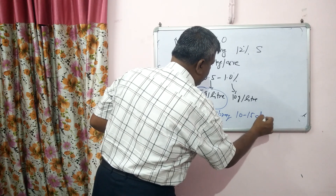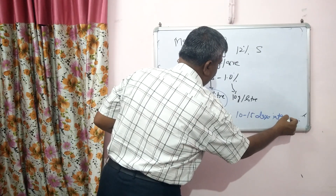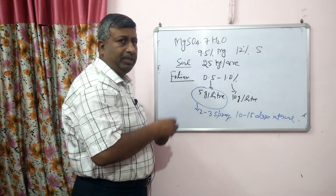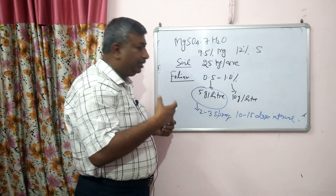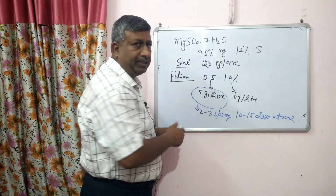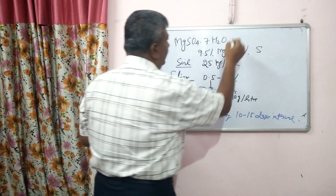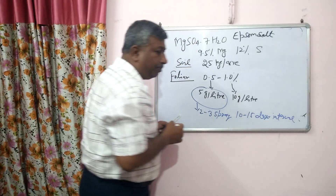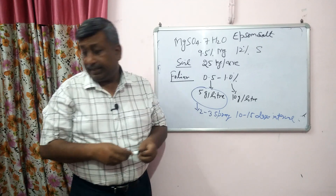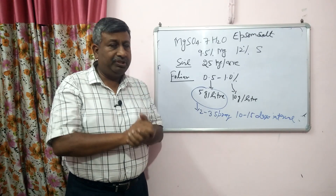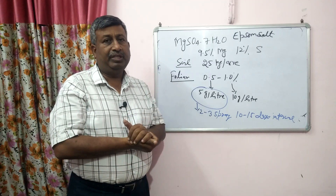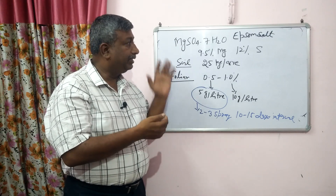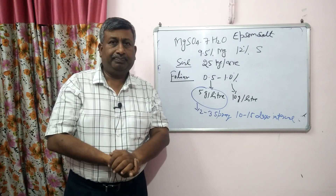Generally we apply foliar application 2 to 3 times at 15 to 10 day intervals using 5 grams per liter — up to a maximum of 1% — if there is a magnesium deficiency. This is also called Epsom salt. So do not ignore magnesium — it has a very important role in deciding grain yield by affecting both the photosynthesis process and the translocation of photosynthates from leaves to grain. Thank you very much.